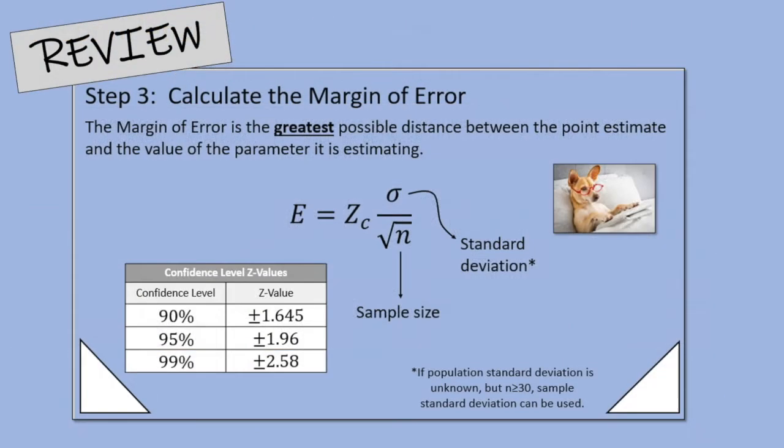Now in step three we found the margin of error and I introduced you to z values for confidence intervals, and there was this asterisk as a part of it. If the population standard deviation is unknown but n is greater than 30, then the sample standard deviation can be used.